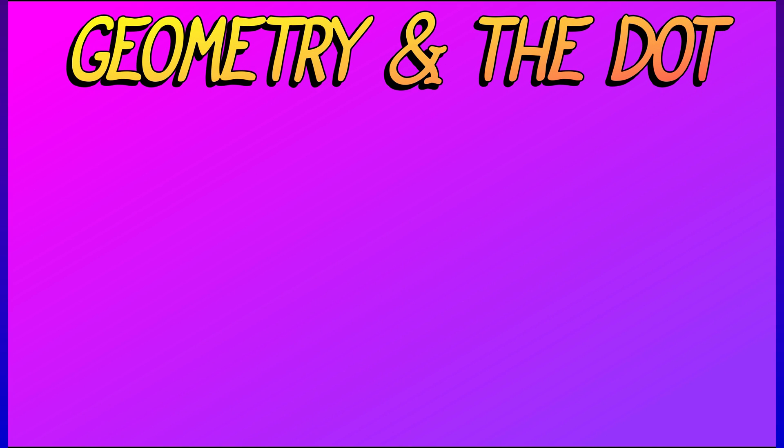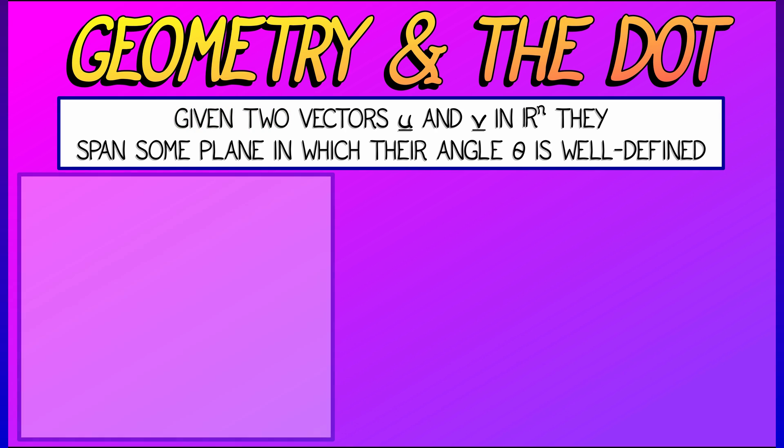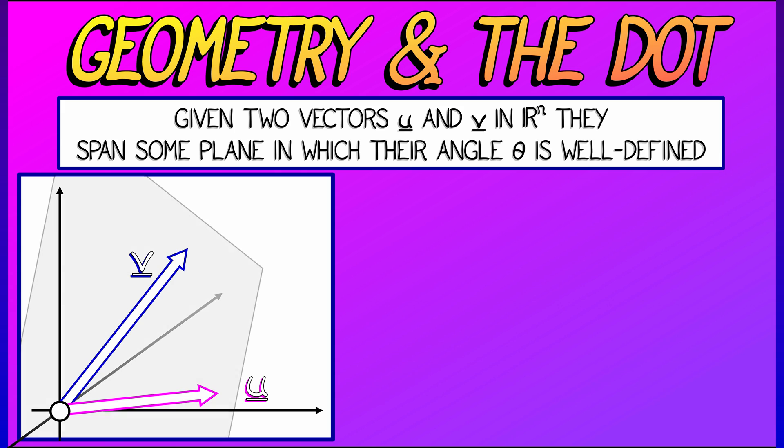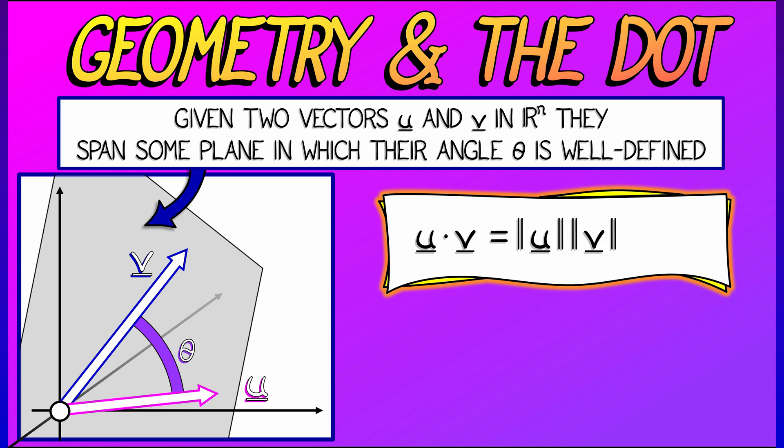For example, let's say that you have a pair of vectors u and v in Rn. Then they span some two-dimensional plane, as long as they're non-zero, and that means the angle between them, let's call that theta, is well-defined and is related to u dot v by the formula.